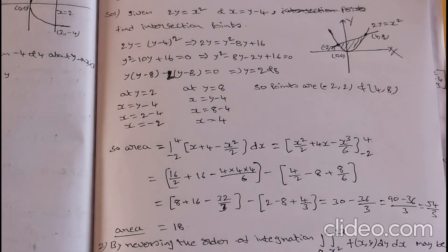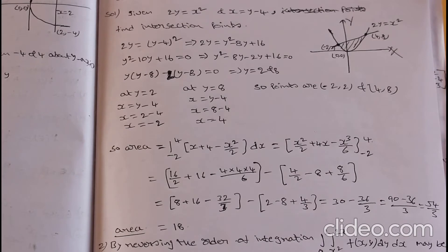So the area is 18. First we drew the curve based on the given equation, then we found the intersection points based on the given line and curve, and then we found the area. This is the procedure to find the area of the curve. Now look at question number two.